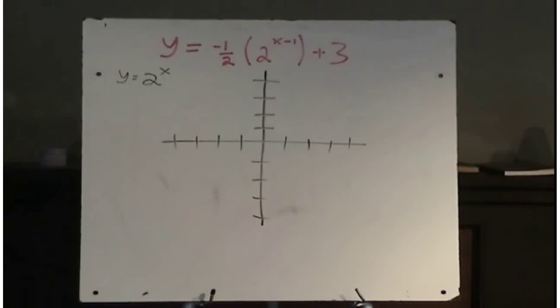So it's a combination of transformations, which we've already learned how to do, to our new graph, which is our basic one, y equals 2 to the x. So let's graph the basic graph of y equals 2 to the x.